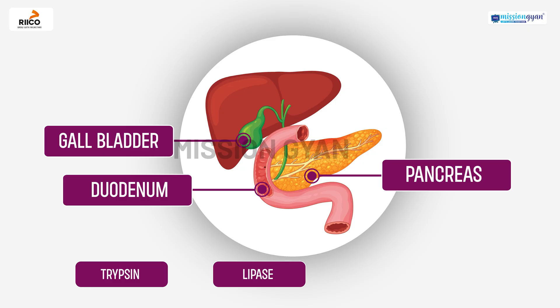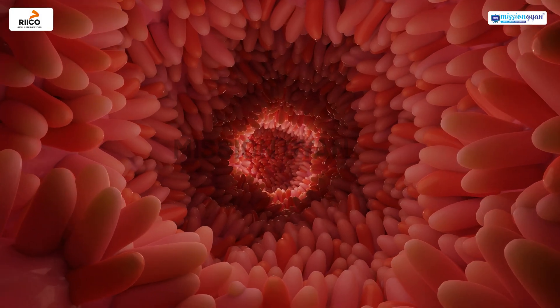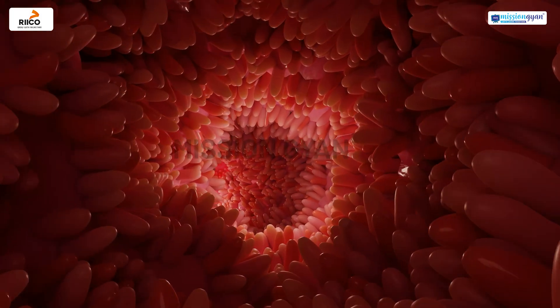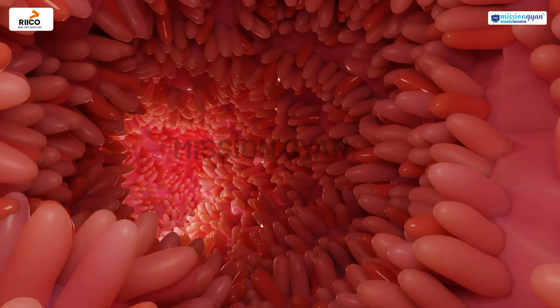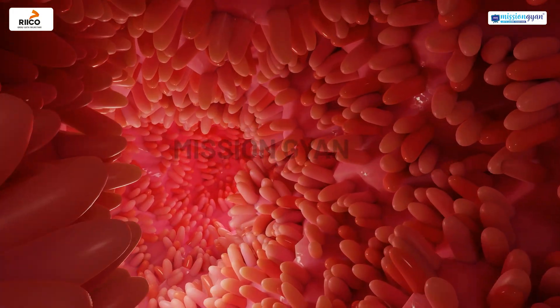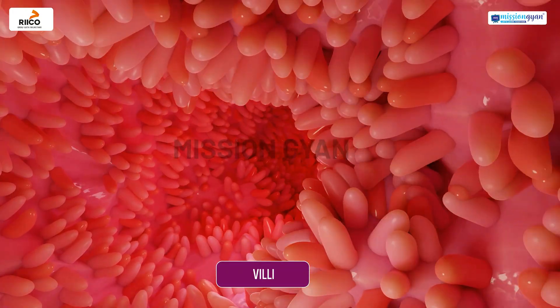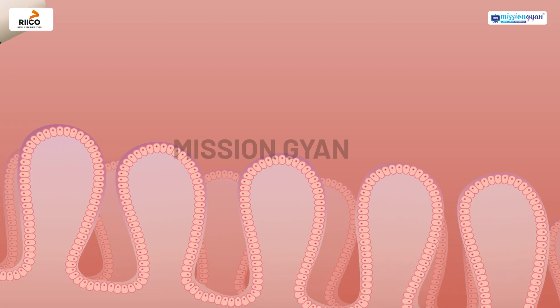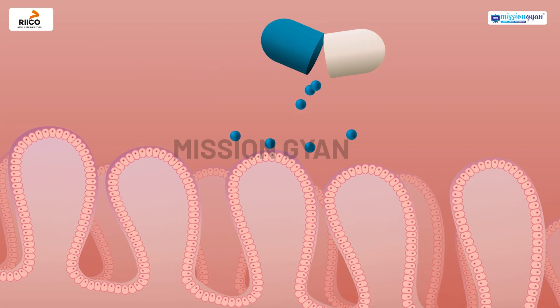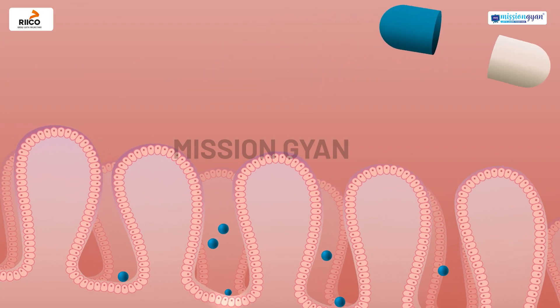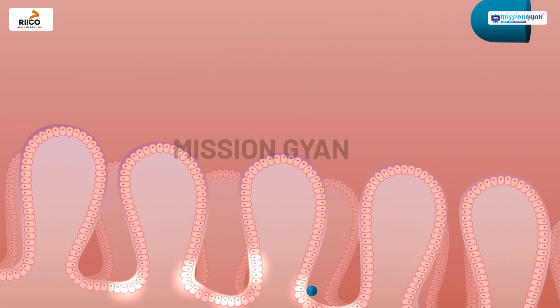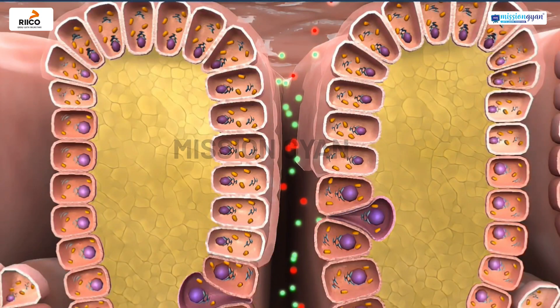The pancreas also produces bicarbonate to neutralize the acidic food coming from the stomach. The inner walls of the small intestine have tiny finger-like projections called villi which increase the surface area for nutrient absorption into the blood.